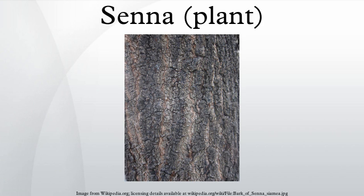Ecology: The caterpillars of many Lepidoptera species feed on Senna plants. The black witch, two-barred flasher, common emigrant, and mottled emigrant have all been recorded on candle bush, for example. Senna species are pollinated by a variety of bees, especially large female bees such as Xylocopa. Some species also have extra-floral nectaries on the leaves or flower stalks, which attract ants but do not benefit pollinators. The ants probably deter herbivores.